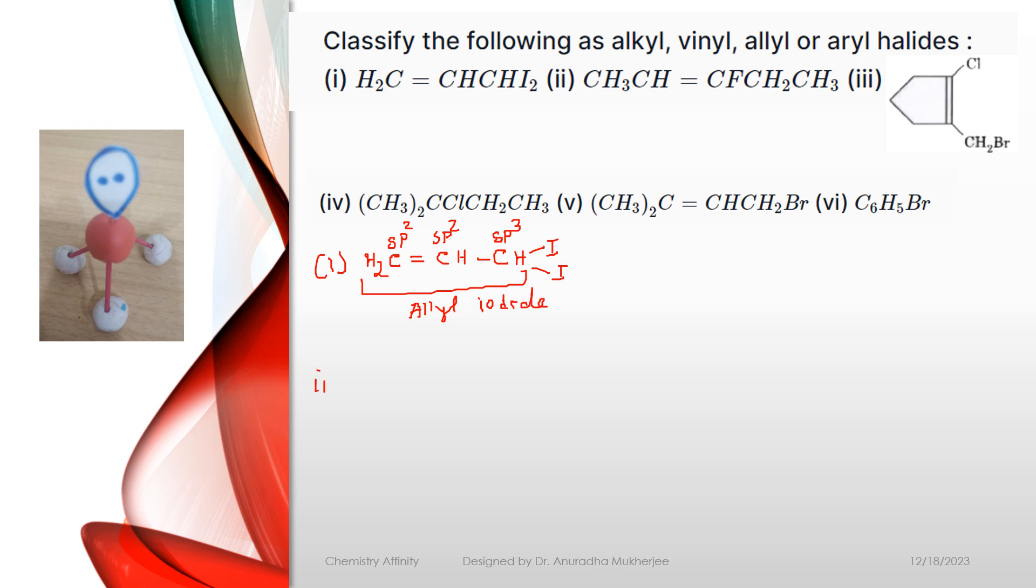Next example: CH3, CH double bond carbon which is connected with fluorine, then CH2, CH3. Now, here we can see this is Sp2 carbon, this is Sp2 carbon and fluorine is connected with an Sp2 carbon, so it is a vinyl group, so it is a vinyl fluoride.